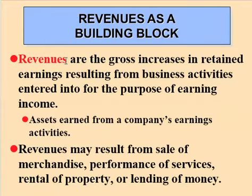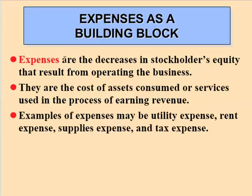Revenues are how a company makes their money. Walmart makes money by selling merchandise and groceries. A tax or accounting firm makes money by providing tax and accounting services. A car dealer makes money by selling cars. Those are all revenues for their respective companies. Companies also incur expenses in order to generate revenues — whether it's employee expense, utilities expense, rent expense, or inventory costs. All those expenses decrease owner's equity.